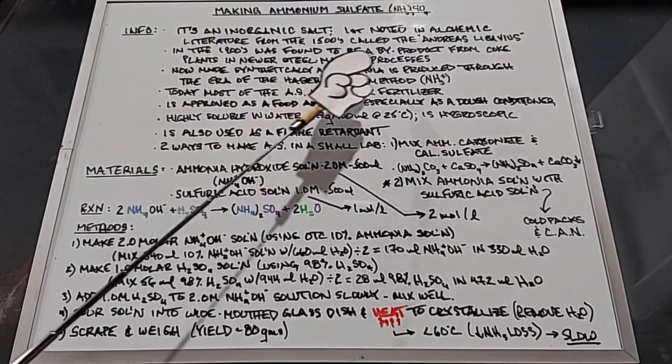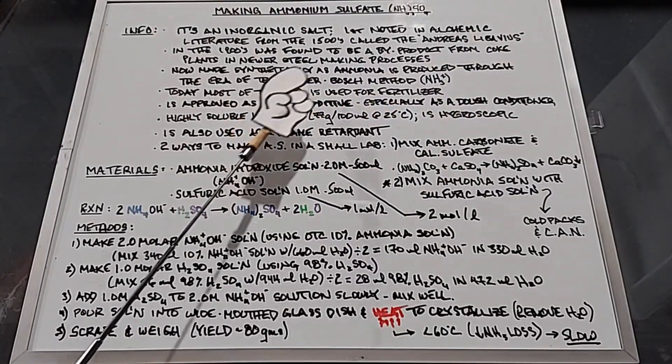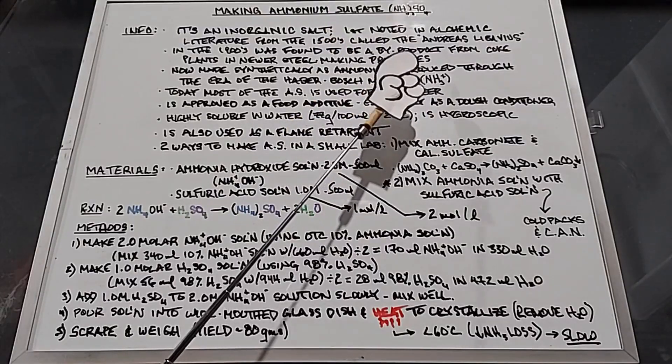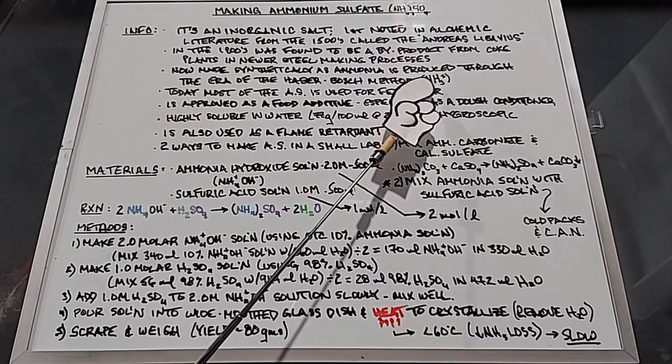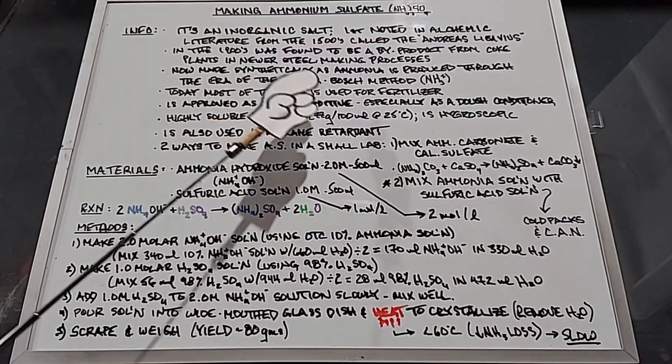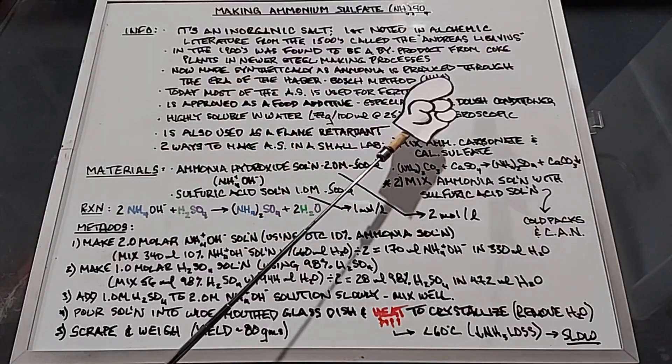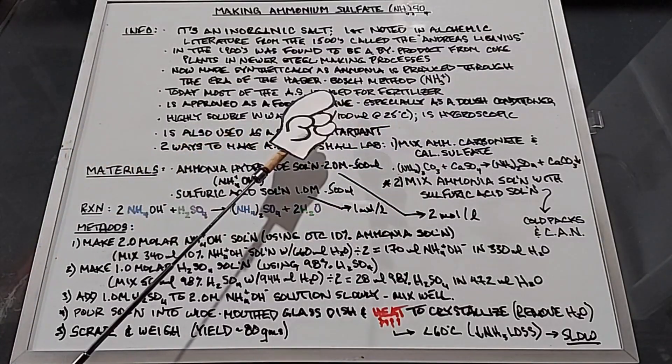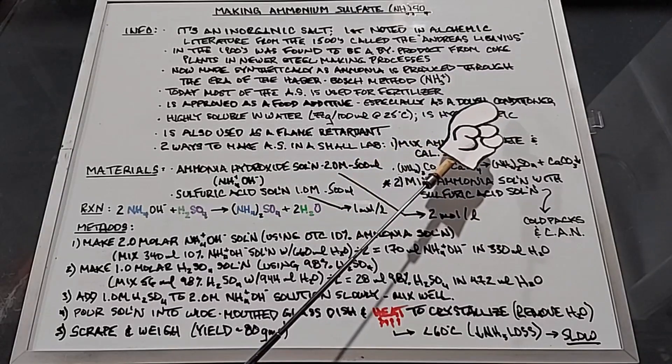Now it's made synthetically as ammonia is produced through the Haber-Bosch method where the nitrogen comes from the air and the hydrogens are ripped off of methane. Today most of the ammonium sulfate that's made is used as a fertilizer but it's also approved as a food additive, especially as a dough conditioner.